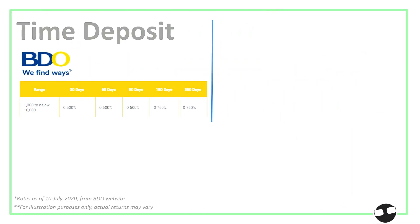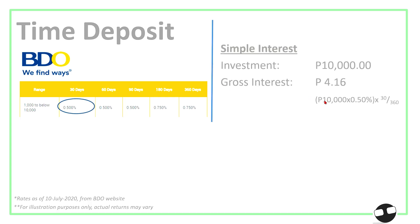Let's say we have a time deposit from BTO. In the bracket of 1,000 to 10,000, and let's say we take 30 days, we would get 0.50% per annum. So to get our gross interest, we simply multiply the principal investment of 10,000 times 0.50% per annum, then multiply by 30 — which is the tenor — divided by 360, and you would get 4.16.